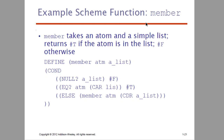Now we have the Scheme function member. The member function takes a symbol and a list as parameters. If the atom is found in the list it returns true, else false. We have already defined a list in the previous class. We use the member function to find an element in the list and take the first elements of the list.